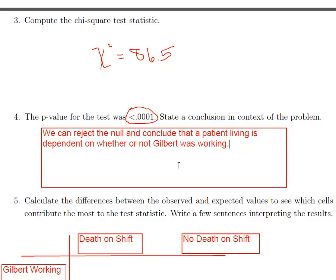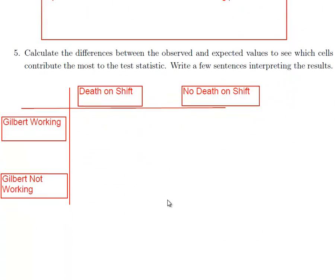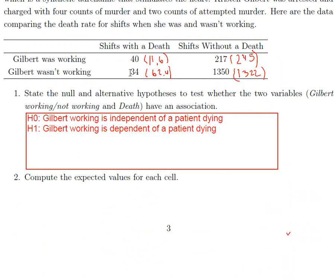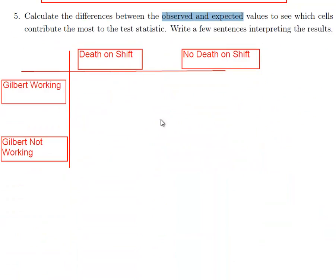Okay. So that in itself doesn't tell me very much. Maybe actually you would want Gilbert to be working. Maybe a patient's less likely to die if Gilbert was working. So what we want to do is calculate what we call residuals. So that's the observed difference minus the expected difference, or the expected value. So observed value minus the expected value for each cell. So I go up here, and I would take 40 minus 11.6, and I would do that for each cell. So each cell has an observed and expected, and that's what I'm getting at here. So we want to calculate the differences for each cell between the observed minus the expected. And that tells us quite a lot of information. So we look at how big the difference is and whether or not it's positive or negative.